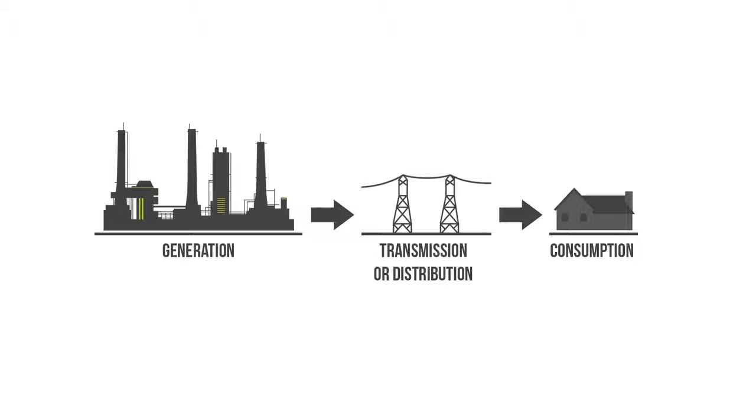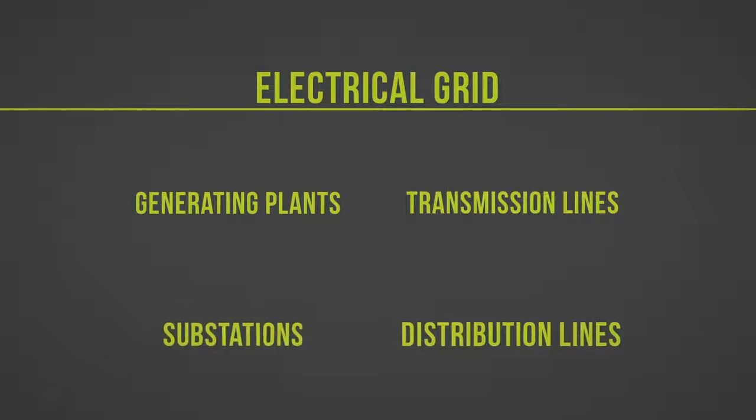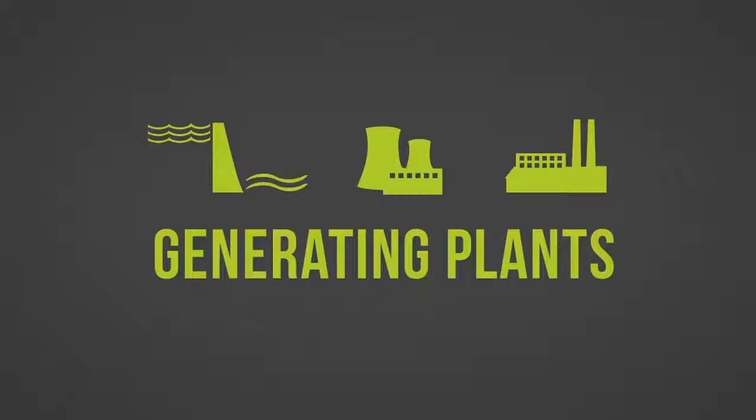There are several key pieces of infrastructure that are built to support the delivery of electricity to consumers. It is comprised of these components: generating plants, where electricity is produced.